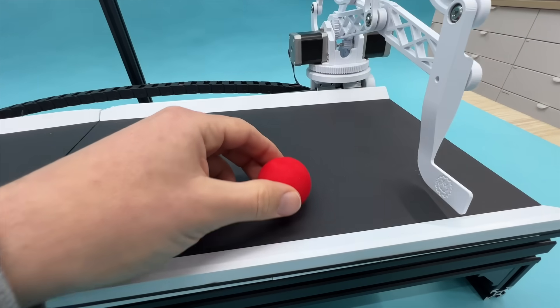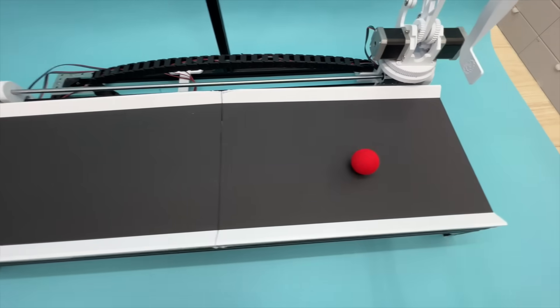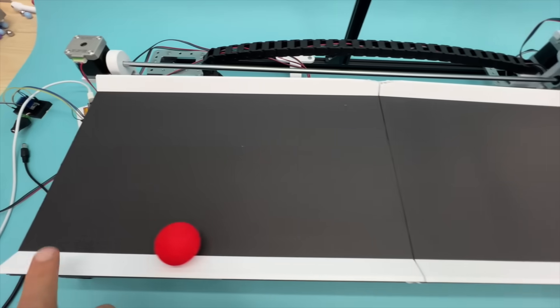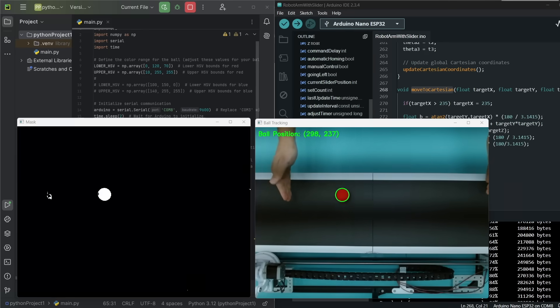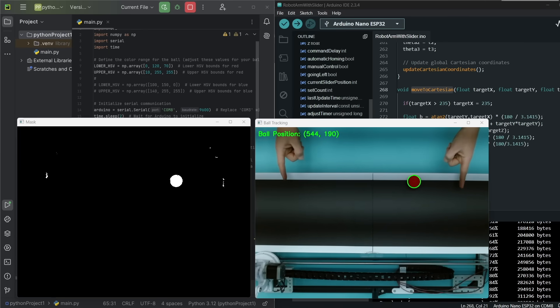Giving a robot hand-eye coordination has two big challenges. The first is tracking the ball's position. To do this, I decided to use a camera mounted above the robot's playing surface. Using a Python library called OpenCV, the position of the ball is calculated. Then this is sent to the Arduino that controls the arm.